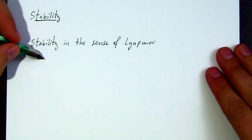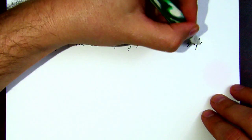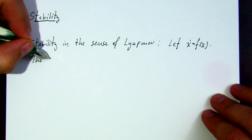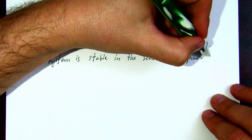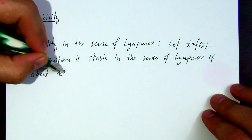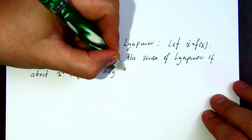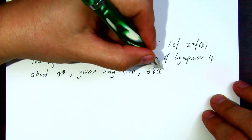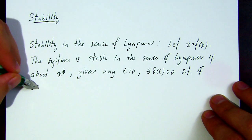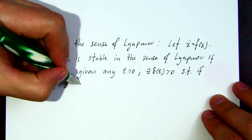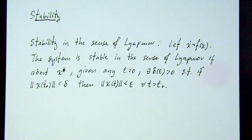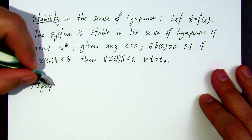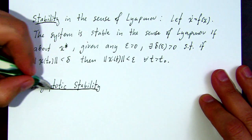Now let's talk about stability definitions. The first is stability in the sense of Lyapunov. For x-dot equals f(x), the system is stable in the sense of Lyapunov if, for any epsilon greater than zero, there exists a delta that can depend on epsilon such that if you initialize within delta, then the states evolve within epsilon for all time beyond the initial time.